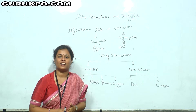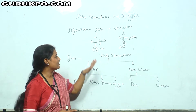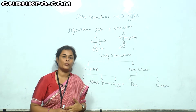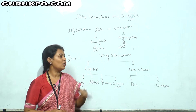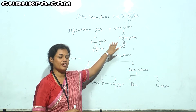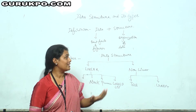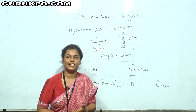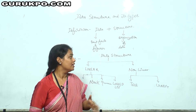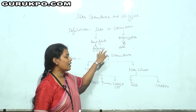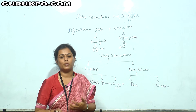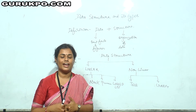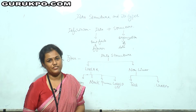First of all we should know what is data. Data are the raw facts and figures which we have in a computer. Whatever we have in a computer is called data, and structure is the way of organizing that data. So basically, data structure is a way of organizing data in our computer system. The bookish definition is: a logical and mathematical model of any data is called data structure.